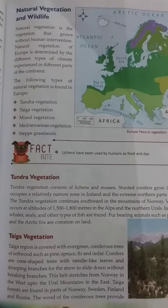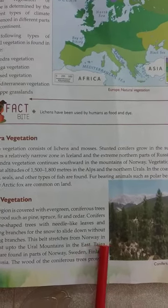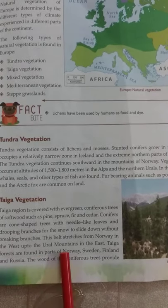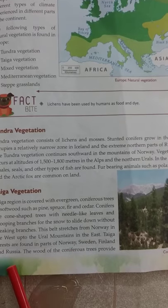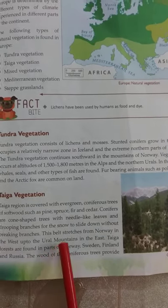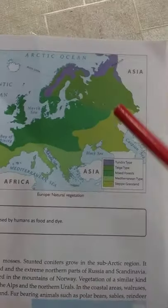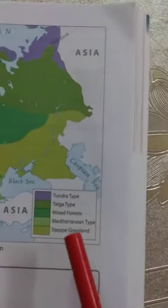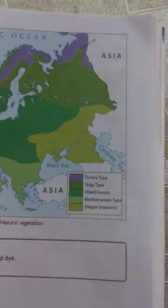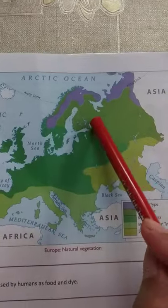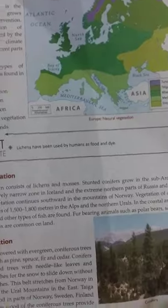The taiga belt stretches from Norway in the west to the Ural mountains in the east, in parts of Norway, Sweden, Finland, and Russia. On the map you can see the green portion — in the index box, just after tundra, it is written 'taiga' — and the taiga vegetation is found just south of the tundra.